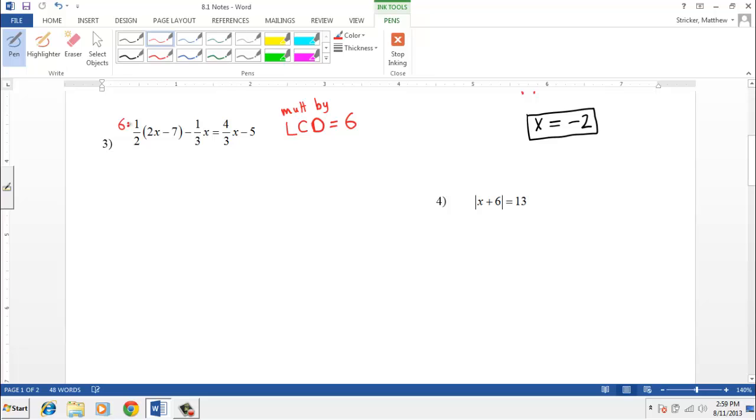So we are going to multiply everything by 6. We're going to multiply the 1 half times 2x minus 7 by 6. We're going to multiply the 1 third x times 6. We're going to multiply the 4 thirds x times 6. And this is a common mistake. A lot of times students forget to multiply the negative 5 times 6, but we need to multiply everything. Remember with equations, if you multiply one thing by something, you have to multiply everything by that. And the beauty of this is that because 2 goes into 6, we lose that denominator. 2 goes in 3 times. And also 3 goes into 6 2 times. 3 goes into 6 2 times. So that all three denominators are now 1's.